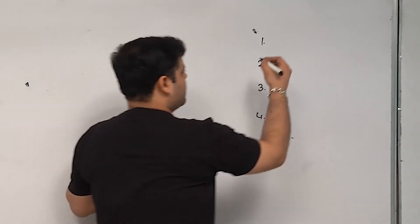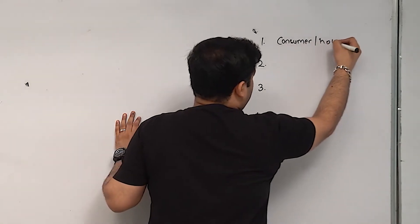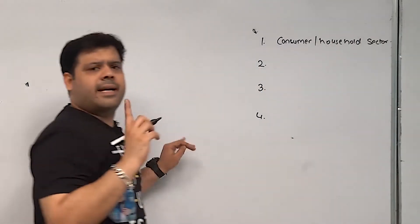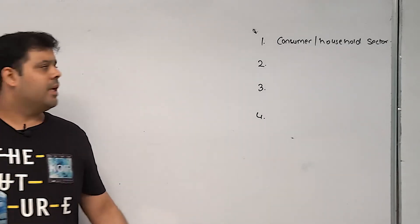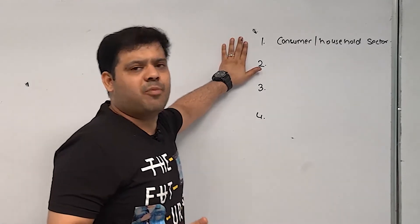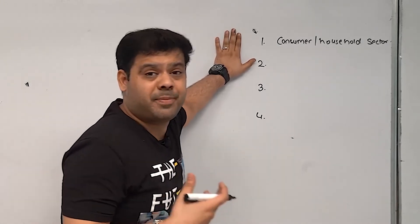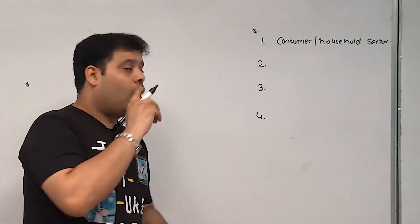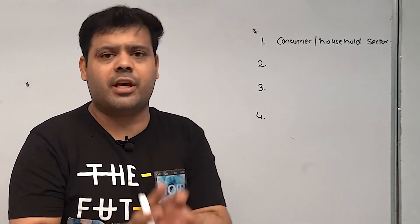The first is the consumer sector or the household sector. This sector consumes things in a utility form. Some consumers have more MPC — marginal propensity to consume — meaning they spend more, while some consumers have more MPS — marginal propensity to save — meaning they save more. The consumer psychology shapes that country's economy.